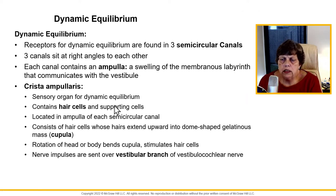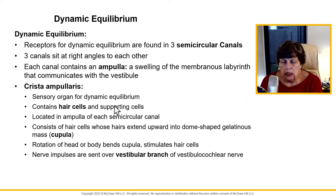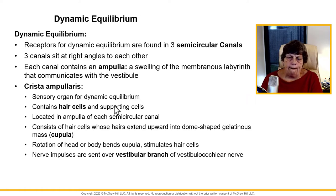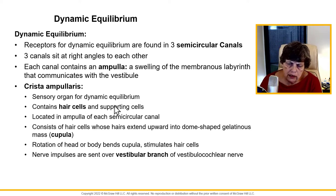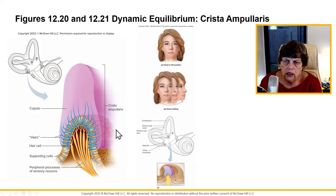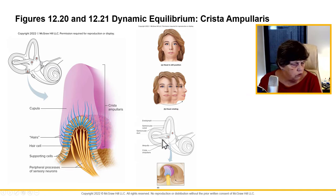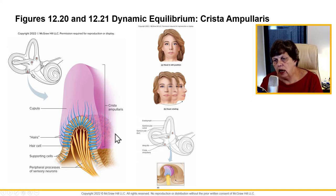Dynamic equilibrium senses rotation and movement of the head and body, and these receptors are found in the semicircular canals. There are three canals at right angles to each other. There is a swelling at one end called an ampulla, which communicates with the vestibule. The organ for dynamic equilibrium is the crista ampullaris, which contains hair cells and supporting cells in the ampulla. The fluid in these canals moves as you tilt or move your head, and because the three canals are at different angles, they tell you exactly how your head is moving.